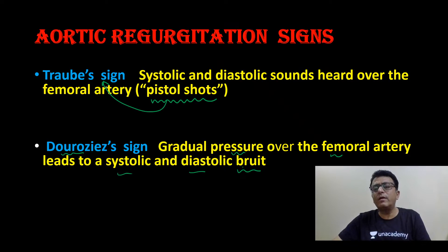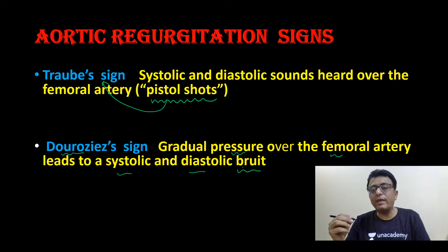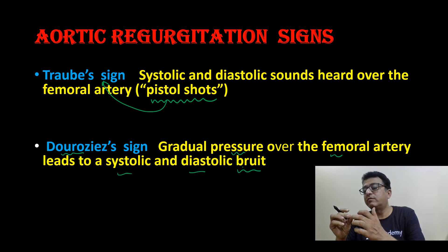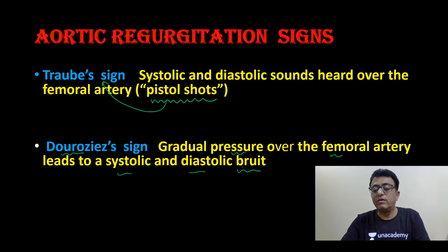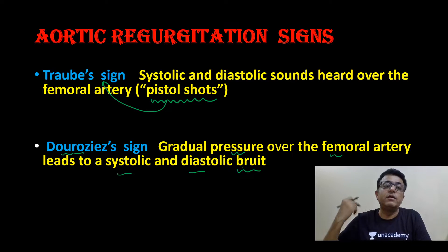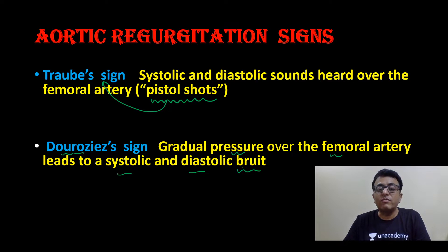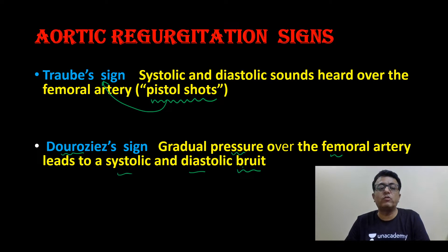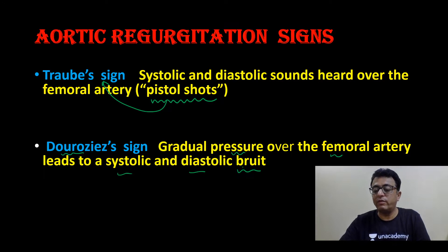To recap: De Musset — nodding of head; Quincke — pulsation in nail beds; Corrigan — dancing carotid; Traube — pistol shot over femoral; Duroziez — bruit on gradual pressure over femoral artery.